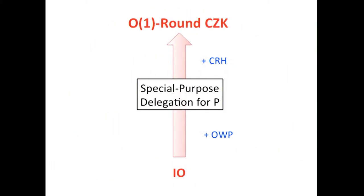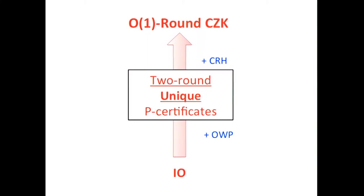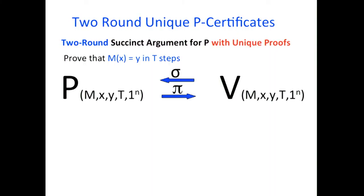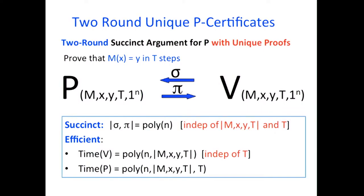Towards constructing constant-round concurrent zero-knowledge from IO, our construction makes use of a special-purpose delegation for P. More concretely, what we need is what we call a two-round unique P-certificate. These are basically two-round succinct arguments for P that have unique proofs. An argument system for P proves statements of the form: machine M on input X outputs Y in T steps. The verifier and prover each send one message, and the succinctness requirement is that both messages are very short — of fixed polynomial length, independent of the statement's length or complexity.